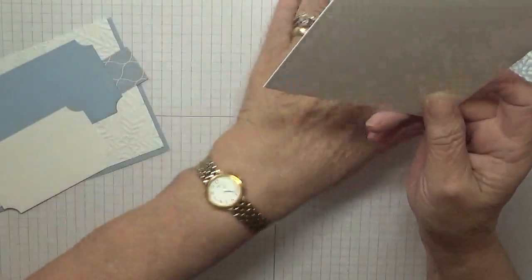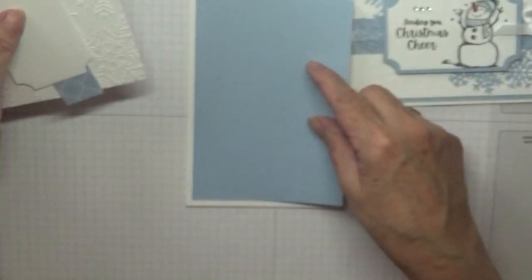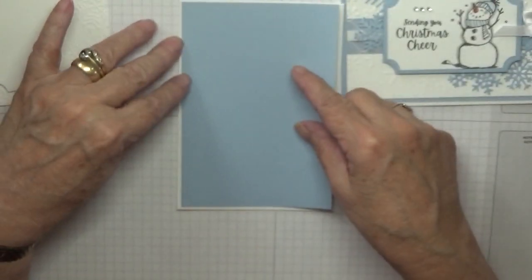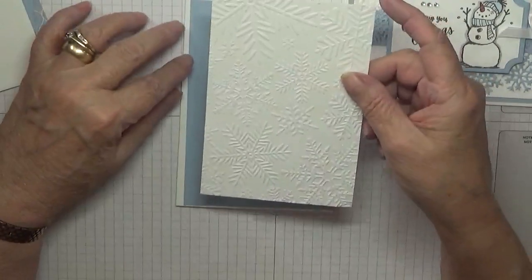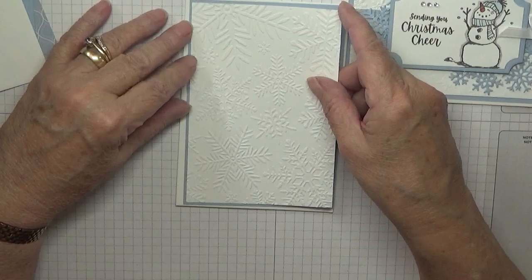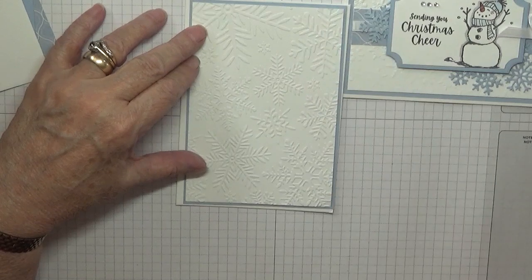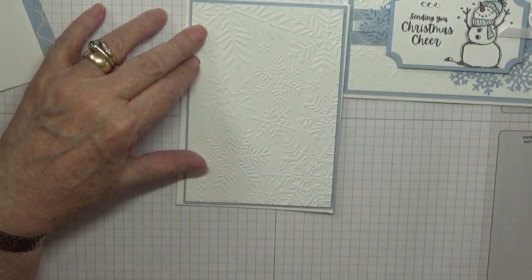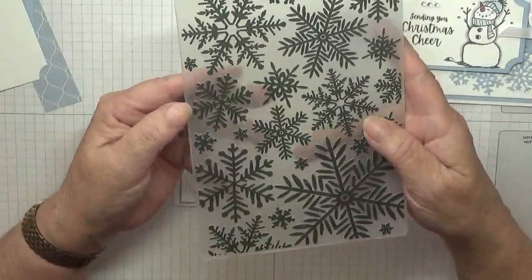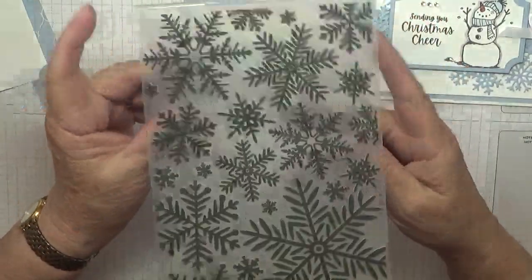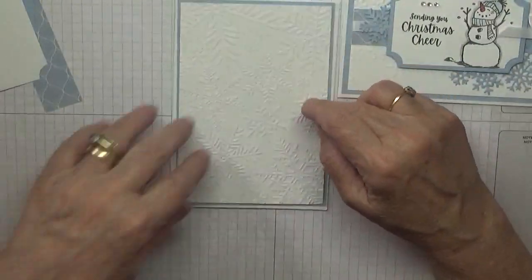I've got a piece of seaside foam and I've only got one bit left, and that is 5 and 5 eighths by 3 and 7 eighths. I have got a piece of whisper white at 5 and a half by 3 and 3 quarters, and I've already embossed that with this snowflake embossing folder. This doesn't have a name on it, just one I found in my box I used.